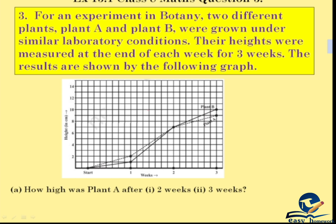Chapter 15, Exercise 15.1, Question 3. We will discuss the next question. For an experiment in botany, two different plants, Plant A and Plant B, were grown under similar laboratory conditions. Their heights were measured at the end of each week for 3 weeks. The results are shown by the following graph.